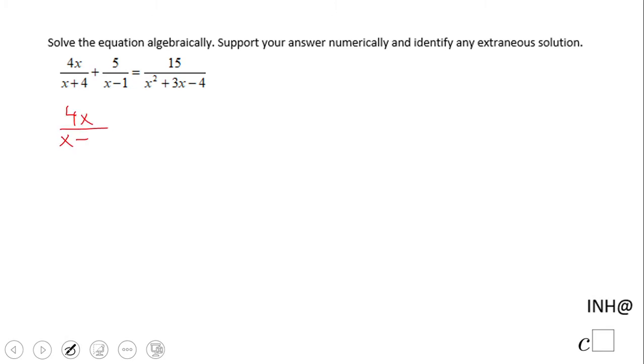First of all, what you want to do is factor out all the polynomials. We need to factor out the right side of the equality, the denominator, the bottom of the fraction x squared plus 3x minus 4. The factor form is x plus 4 times x minus 1.